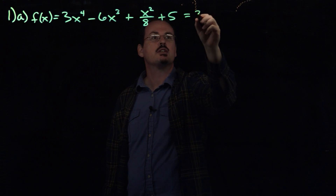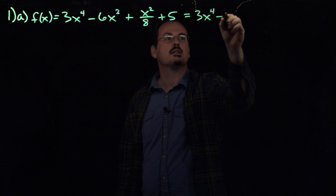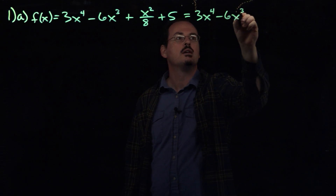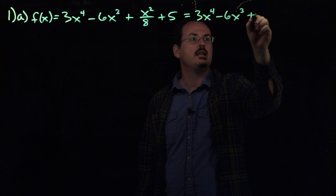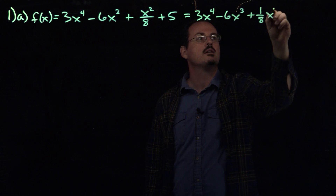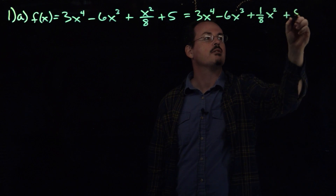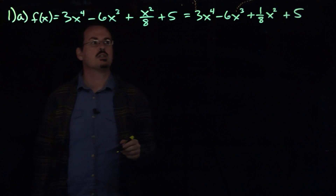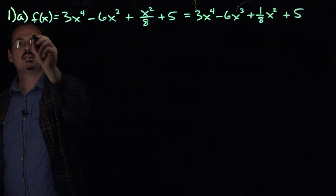So I'm going to rewrite the function as 3x to the fourth power minus 6x to the third. Then this 8 in the denominator, I can write this as 1/8 x squared, and then plus 5. That's really the best way to deal with just constants in the denominator like that.